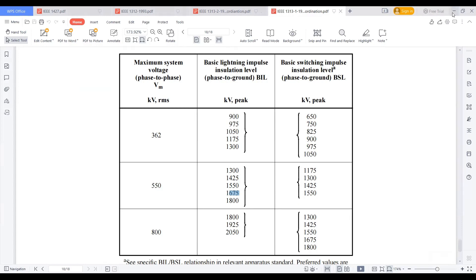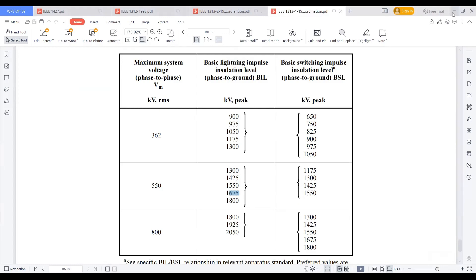In the insulation coordination study, calculating the BIL and BSL levels of my substation from different factors. First of all, I am drawing the single line diagram and I am finding out what is the distance of each equipment from the junction of my arrester.